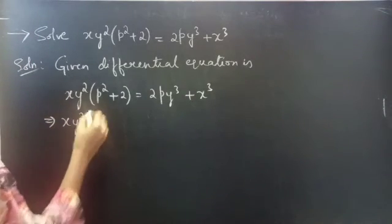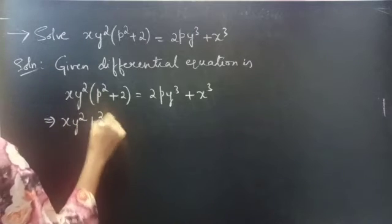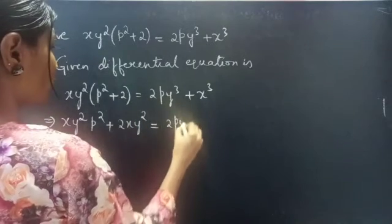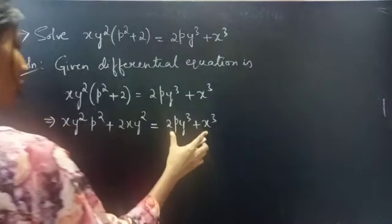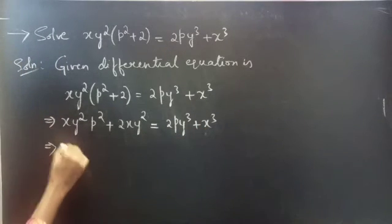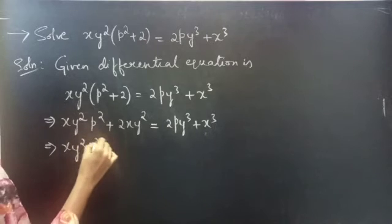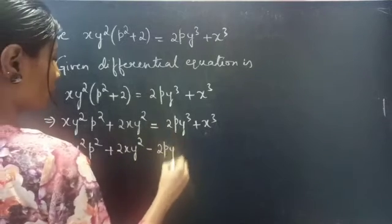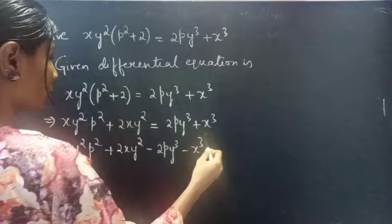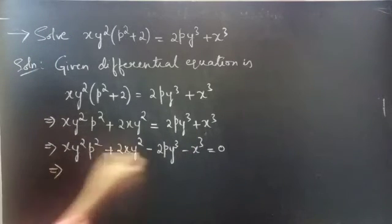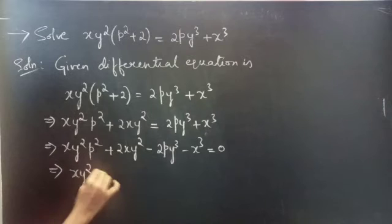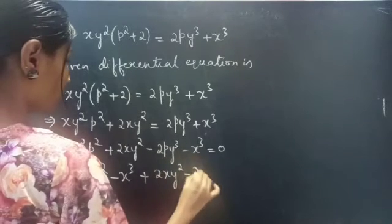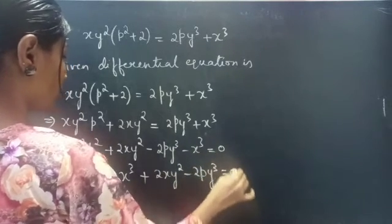You can write this as xy²p² + 2xy² = 2py³ + x³. Now take these two terms to the LHS: xy²p² + 2xy² - 2py³ - x³ = 0. Again you can rewrite this as xy²p² - x³ + 2xy² - 2py³ = 0.